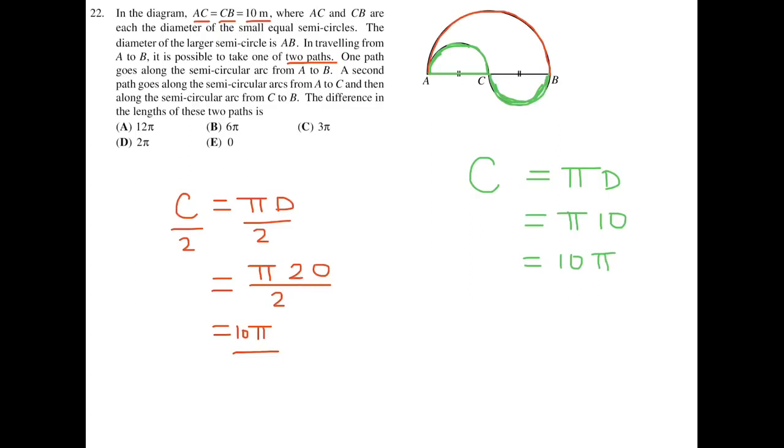So 10 pi like that. So the red path is 10 pi, and the green path is also 10 pi. So the difference between the length of these two paths is zero. 10 pi minus 10 pi. Zero. So 22 is E.